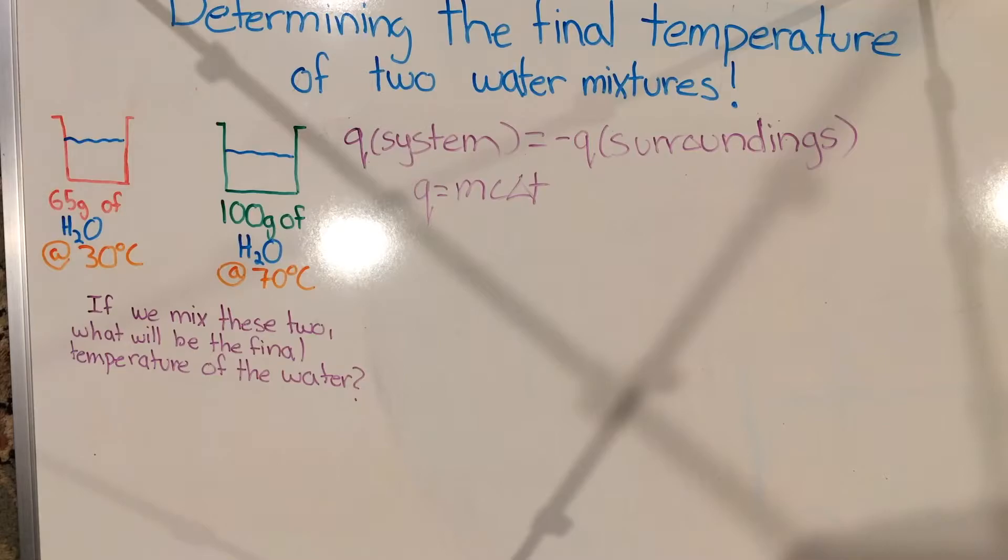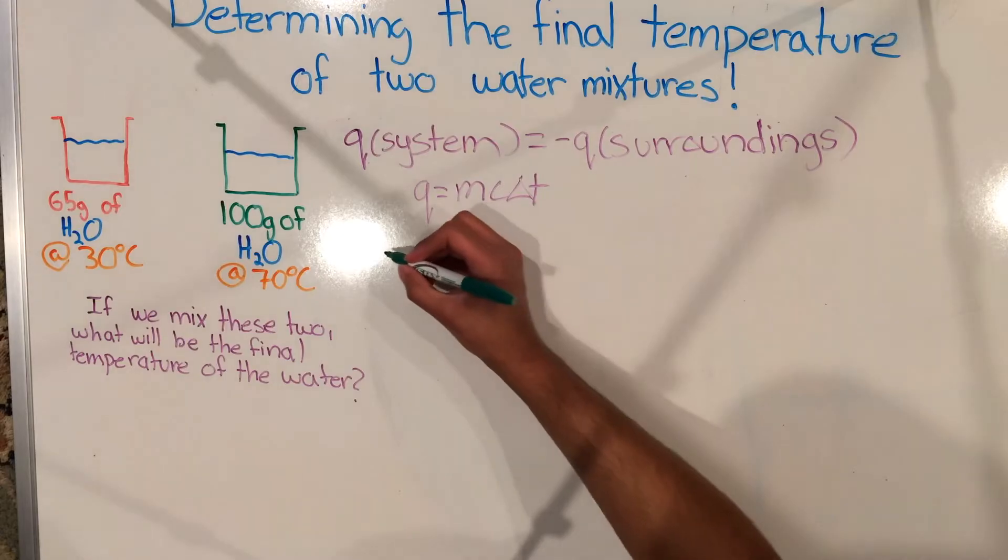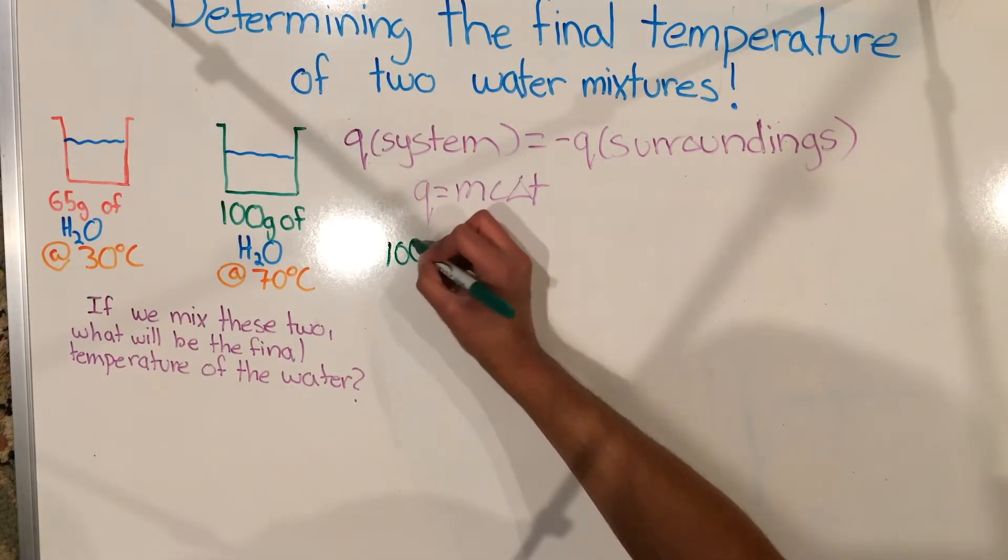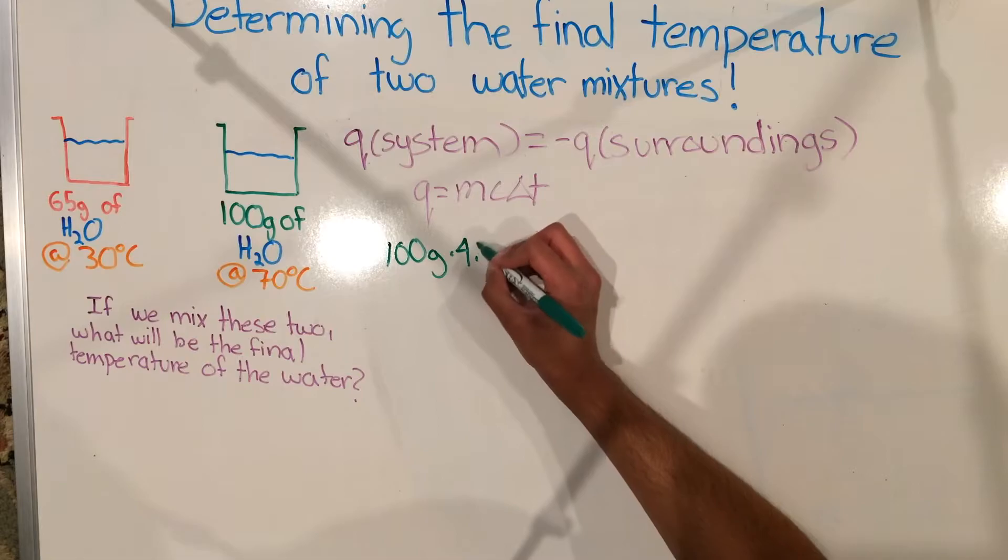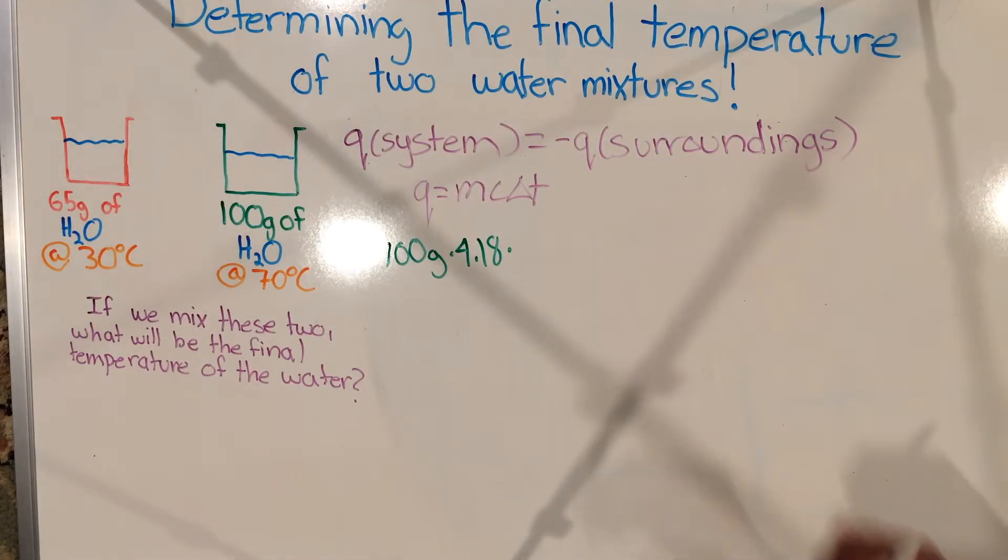Now, our question is, if we mix these two jugs of water together and get a final cohesive jug of water, what will be the final temperature of this water? What do we do? First, we identify that the heat of the water jug, the first water jug is equal to the negative heat of the second water jug. We know that the specific heat capacity of water is 4.18 joules per gram times Celsius, so that is our value for C.